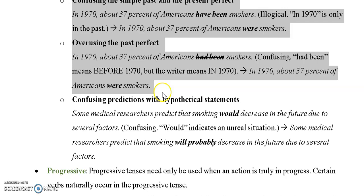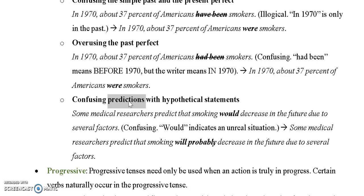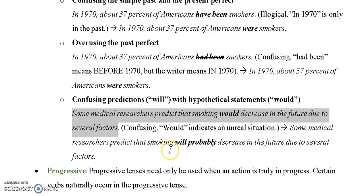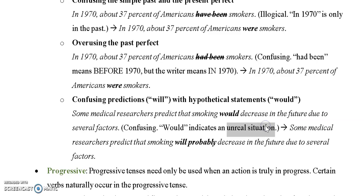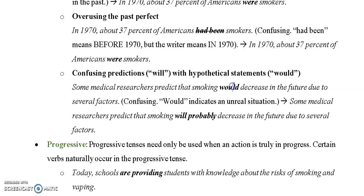Another common error is confusing predictions with hypothetical statements. A prediction is associated with the future tense, while a hypothetical is associated with 'would' — it's imagined and unreal. For example: 'Some medical researchers predict that smoking would decrease in the future due to several factors.' That's strange because 'would' indicates an unreal situation. This is a prediction, so the correct word is 'will' — and you might add a little hedging word like 'probably.' Watch out — separate 'would' and 'will.' In spoken English we use 'would' in various ways we don't use in writing.